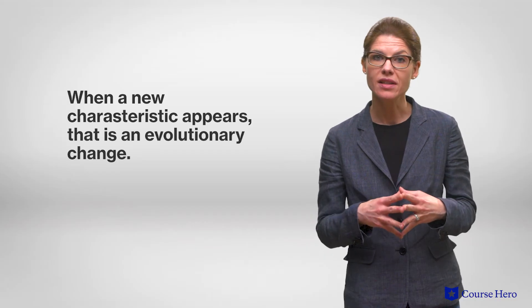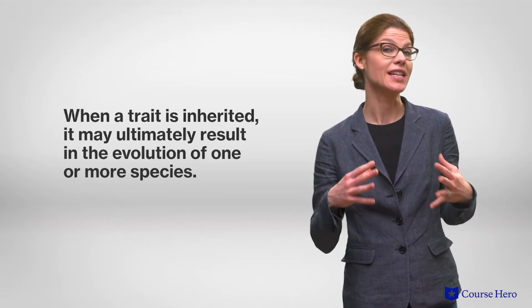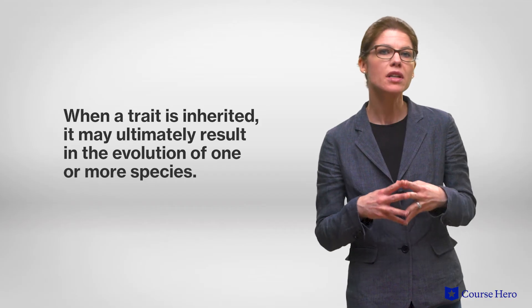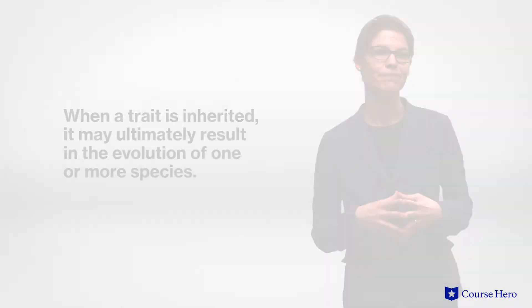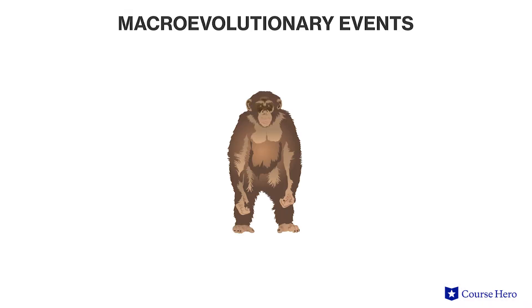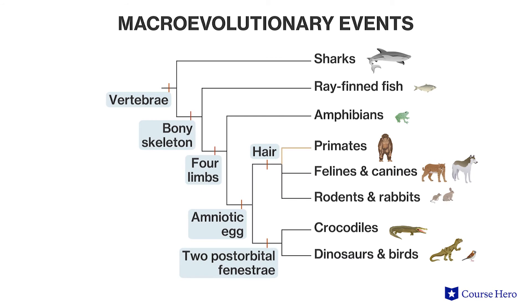Each branching in a phylogenetic tree is an example of macroevolution in action. When a new characteristic appears, that is an evolutionary change. If that new trait is inherited, this may ultimately result in the evolution of one or more species. For example, developing a hair or fur-covered body was a macroevolutionary event. This character trait was passed on to felines, canines, rodents, and primates.